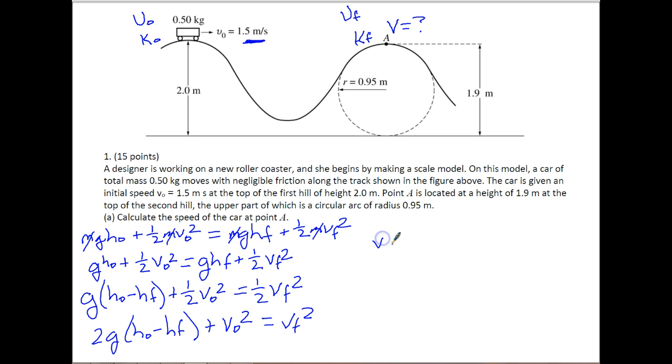So let's go ahead and plug everything in. Again, we're going to say VF squared is equal to 2 times 10 times the original height, which was 2 meters, minus the final height, which is 1.9 meters. And then we're going to add to that the 1.5 squared. Once you solve, you should end up with an answer of, for VF, of 2.1 meters per second. You'll notice that you do have to do the square root at some point, but I just kind of left that out until this point.